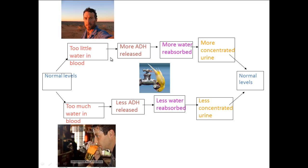If you've got too little water in the blood, more ADH is released, more water gets reabsorbed, so you're going to have a more concentrated urine. And if you're just to go by colour, the concentrated urine would be more yellow and the dilute urine would be less yellow.